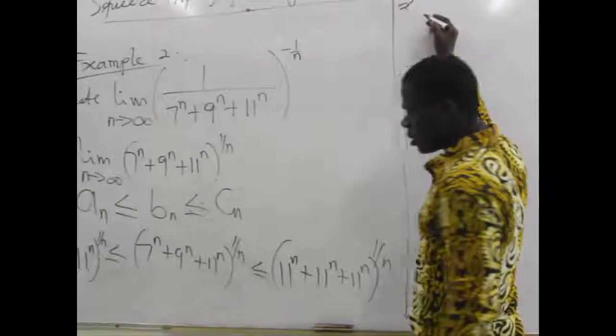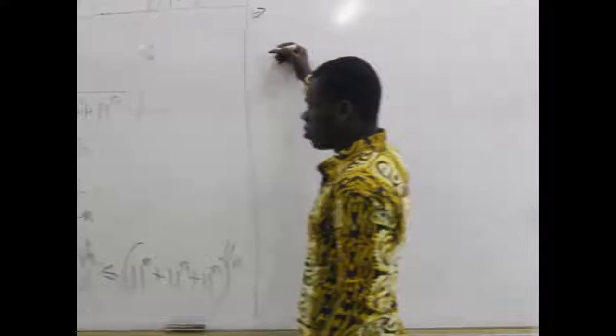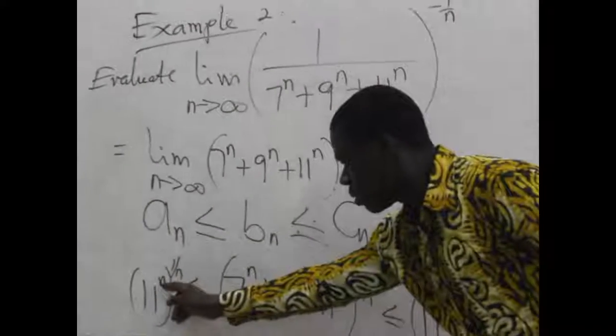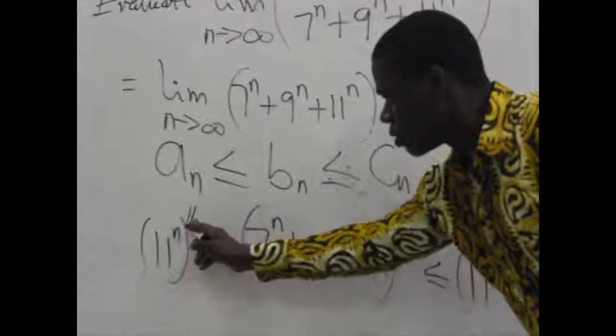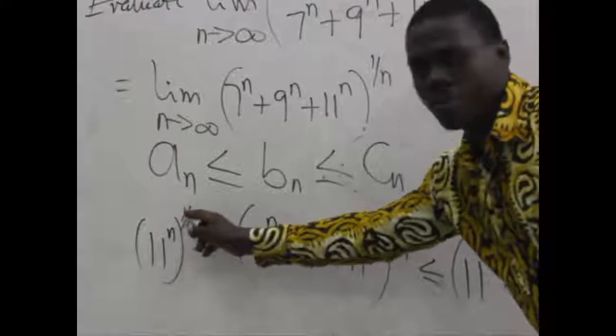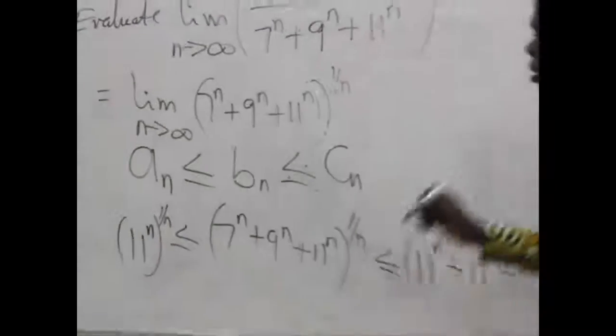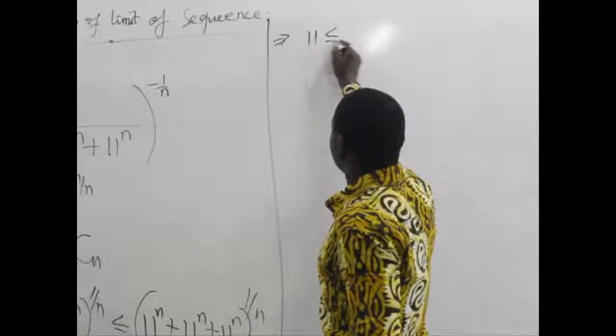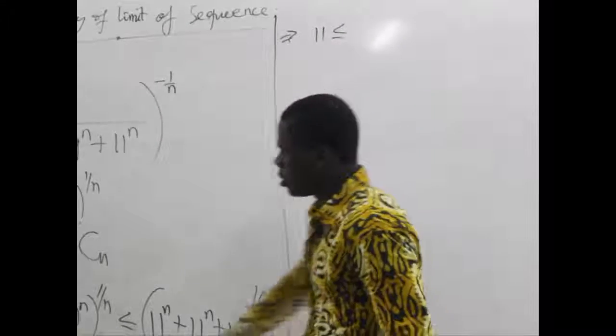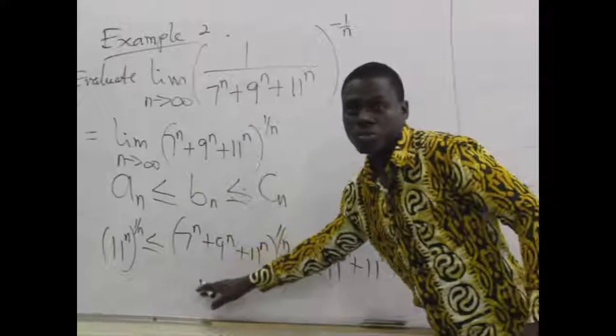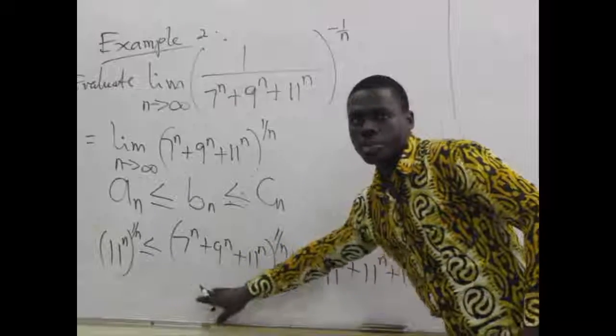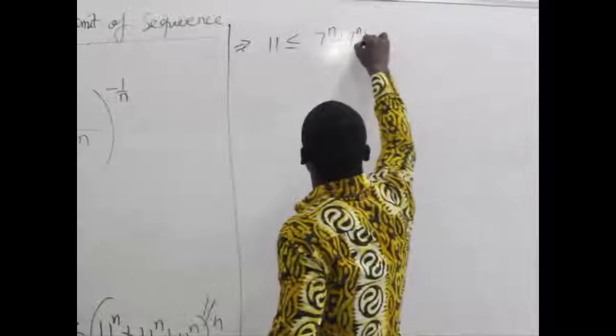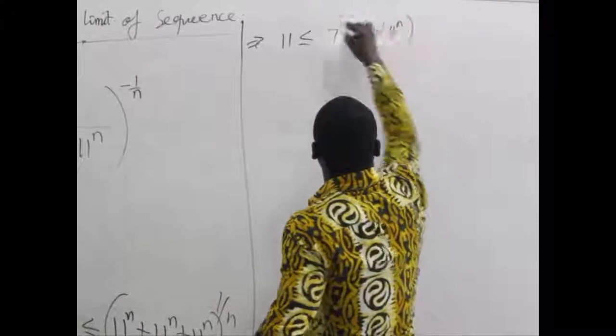From there it implies that with this particular one, we are raising power to another power, so we multiply. We are having n/n which gives us 1, so we are having 11^1. And less than or equal to, here we will not simplify it, but we still maintain this here. We write it as this.